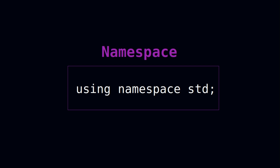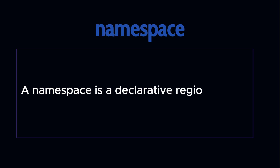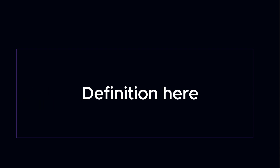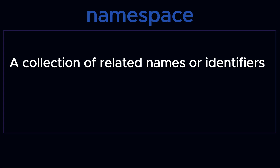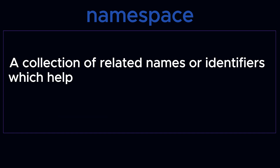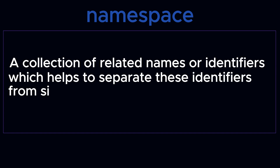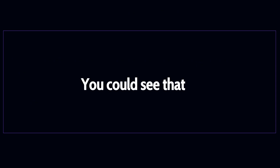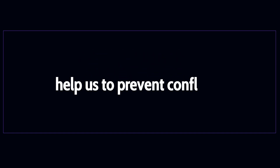This is where you must use namespace in your project. A namespace is a declarative region that provides a scope to an identifier inside it. Another definition: a namespace is a collection of related names or identifiers — these identifiers can be functions, classes, and variables — which help us separate these identifiers from similar identifiers in another namespace or the global namespace. Namespace helps us prevent conflict between entities.